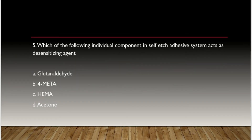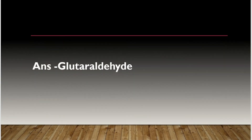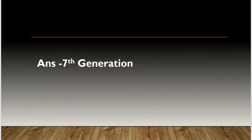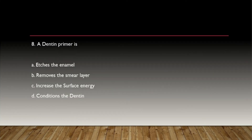Which of the following individual components in the self-etching adhesive system acts as a desensitizing agent? Glutaraldehyde, formetta, HEMA, or acetone? The answer is glutaraldehyde. Glutaraldehyde etches the enamel.